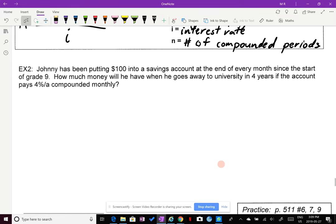And let's look at a different example in a different way. Johnny has been putting $100 into his savings account at the end of every month since the start of grade 9. How much money will he have when he goes away to university in four years if the account pays 4% interest every year compounded monthly? So this time we're looking at a regular payment of $100, okay? And it's happening every month for four years. So how many compounding periods is that? Well, if it's four years times the number of compounded periods every year is 12, it's monthly. So four times 12 is 48. So 48 compounding periods. What's our interest rate? So i, the interest rate is 4% a year. So decimal is 0.04. But it's compounded monthly, so I have to divide by 12.